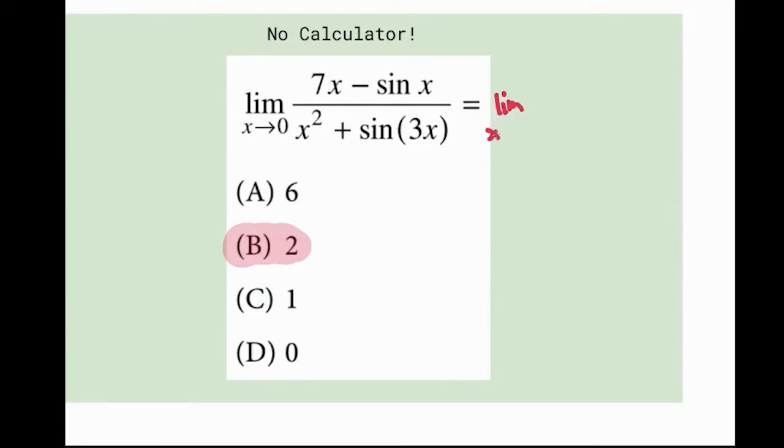Right away, you should plug in zero for X. And you notice you get zero on top and zero on the bottom. That means a light bulb should be going off in your head that you need to use L'Hopital's rule. So that's what we're going to do.